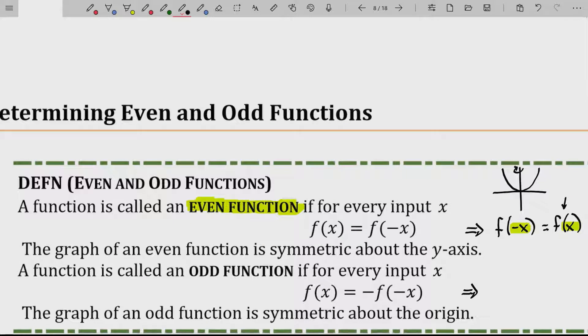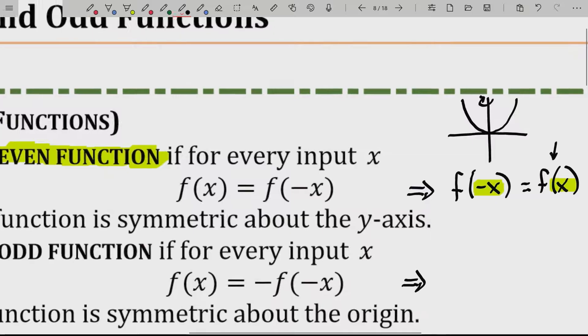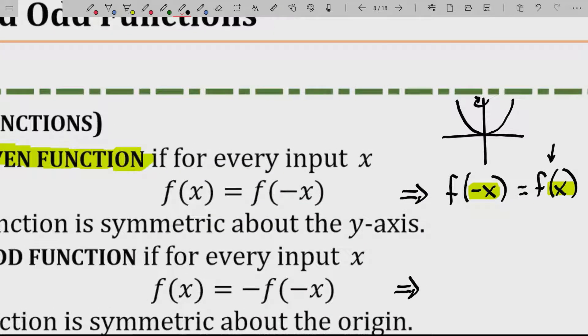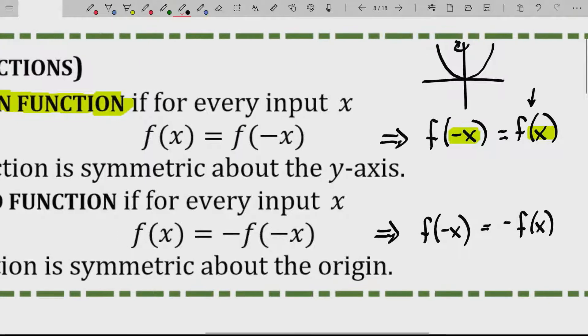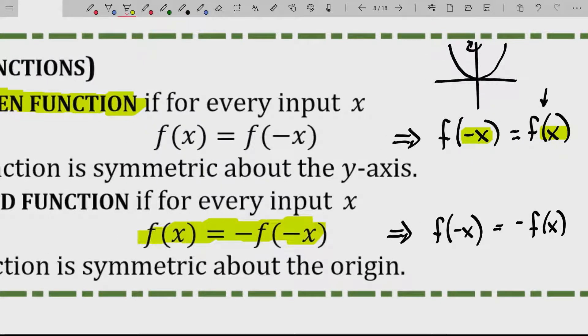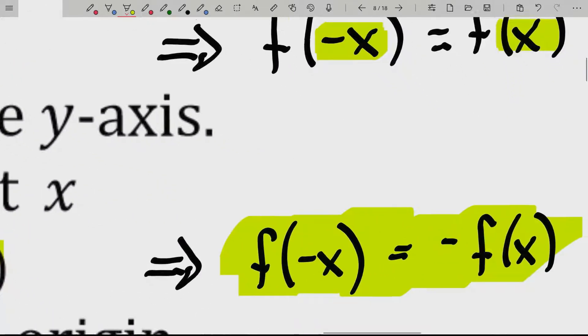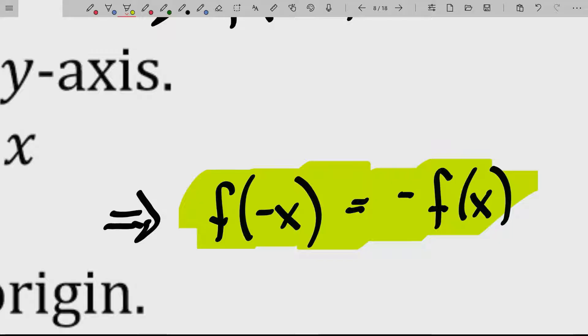So a function is called odd if for every input of x, the following is true. Now I copied down what the author would write, but that's not how I would write it. Honestly, I would say it's a function called odd if f of negative x is equal to negative f of x. Don't get me wrong, these two do mean the same thing, but it's traditionally written this way. So a function's odd if when you plug in a negative x to it, it ends up being the same as had you had the negative of f of x.